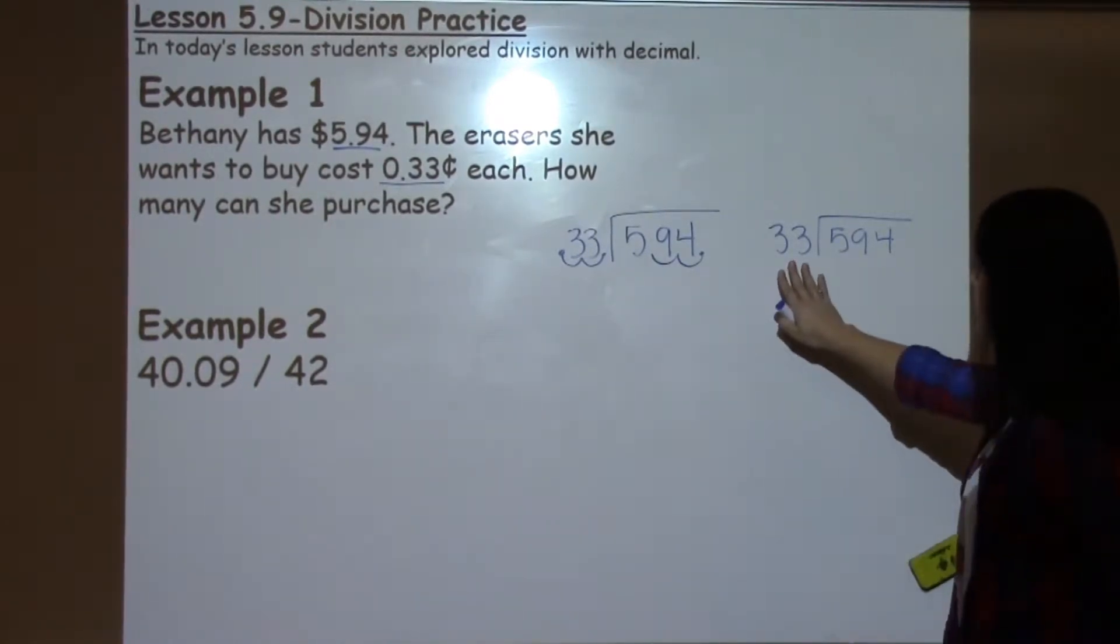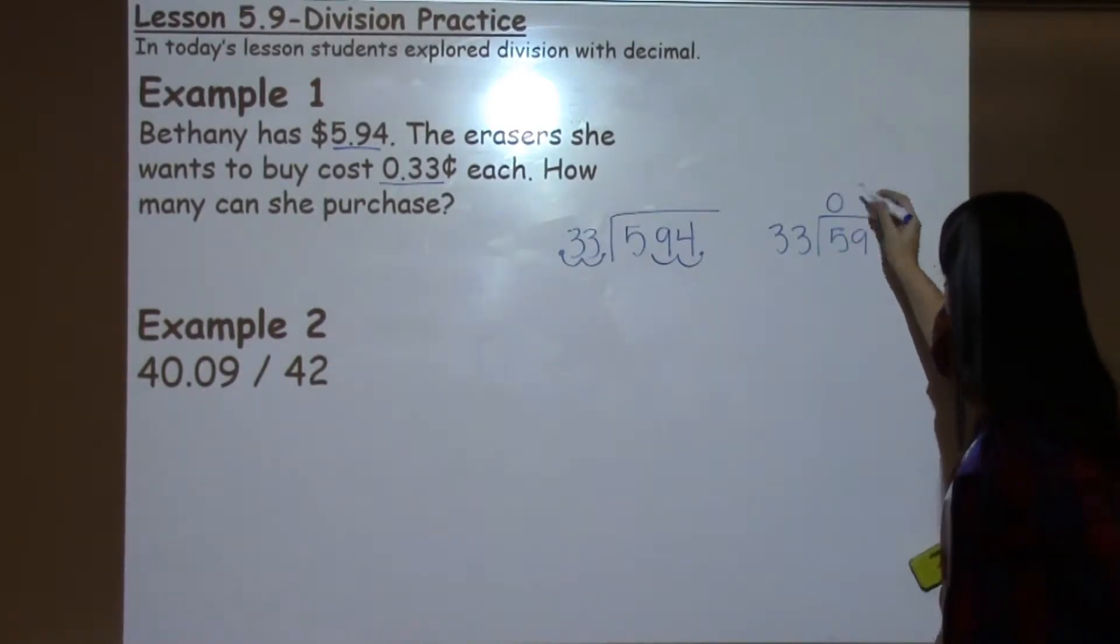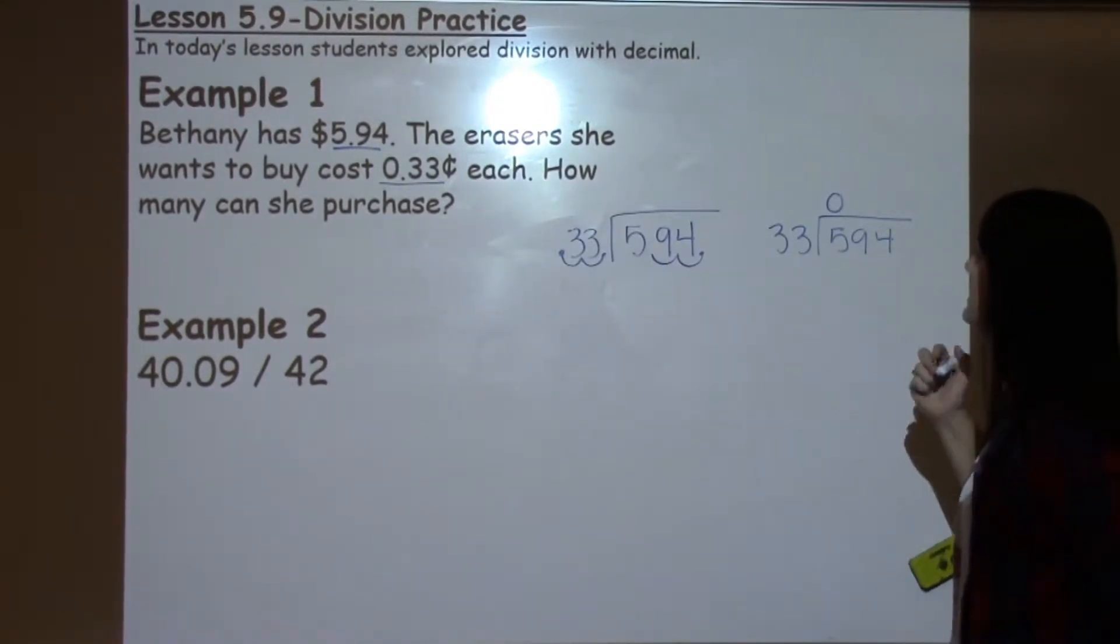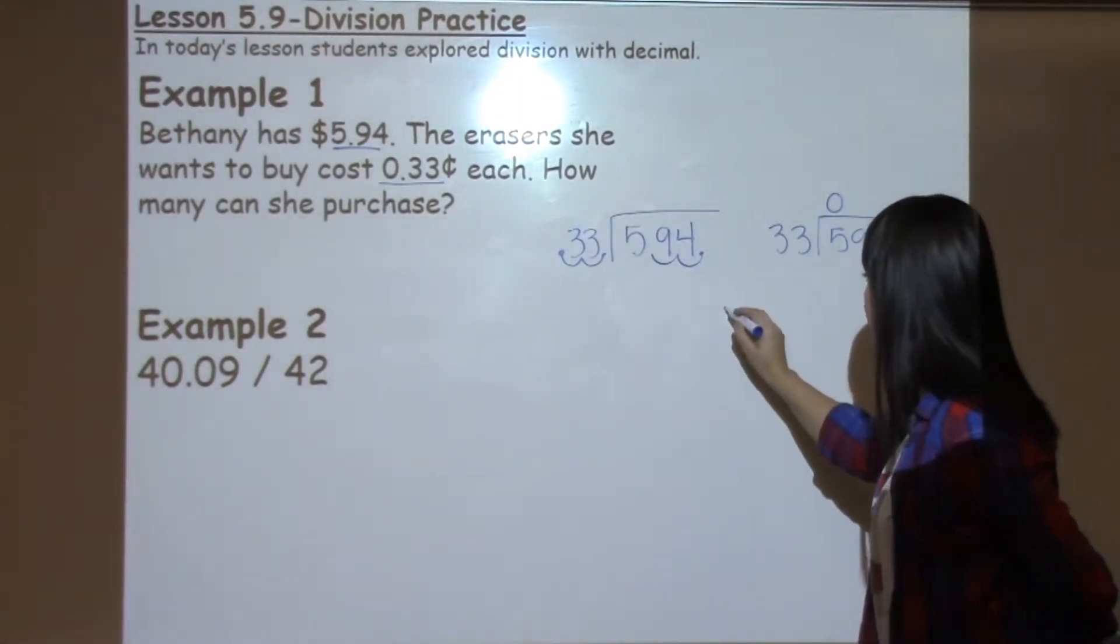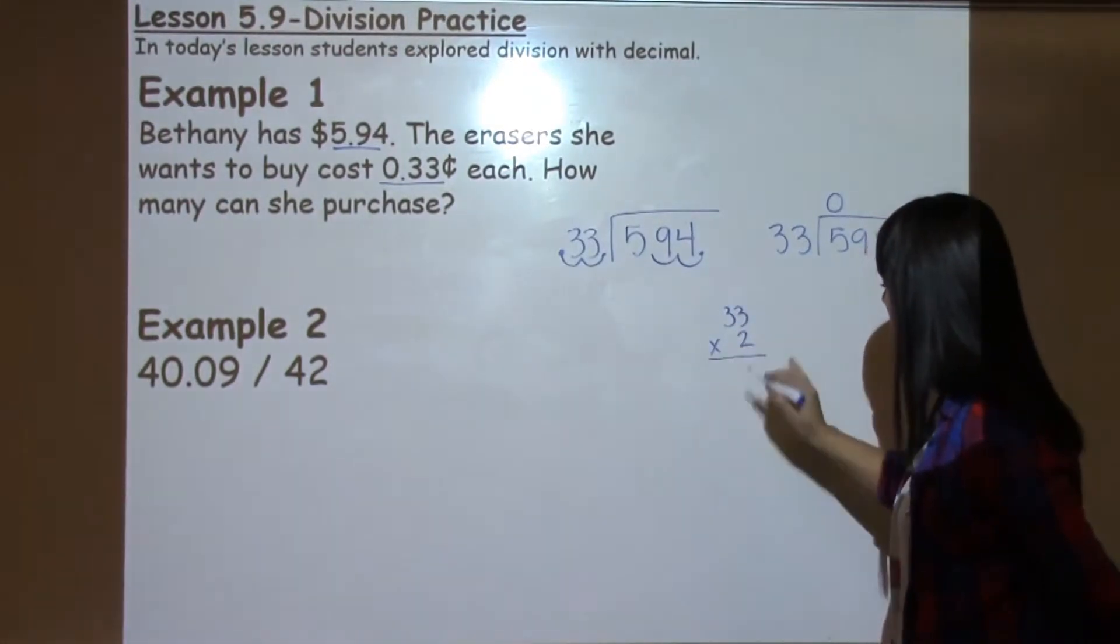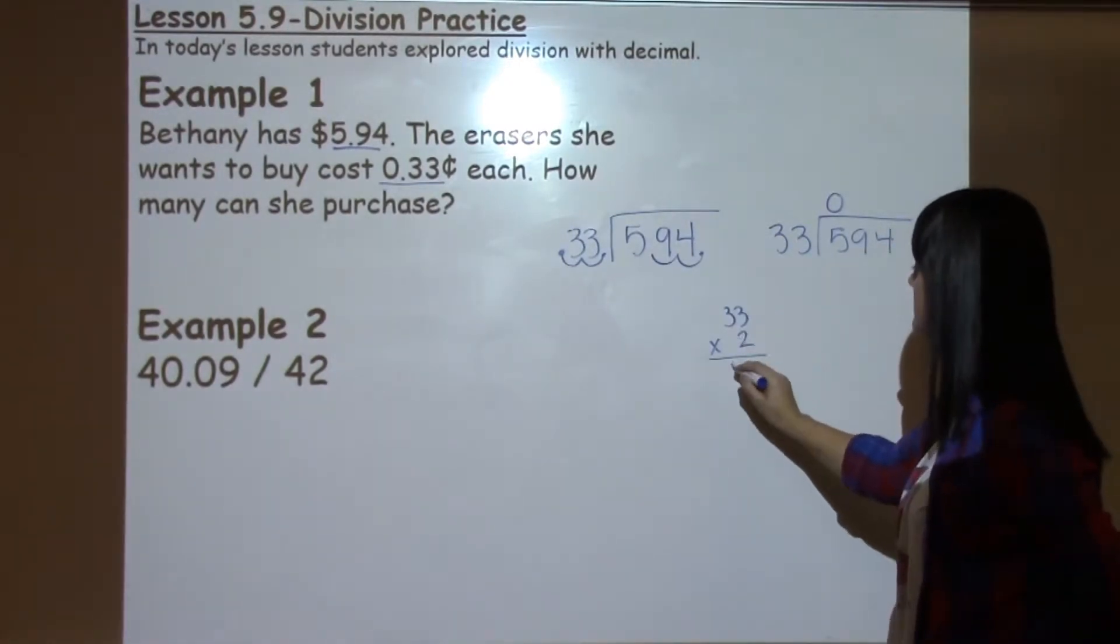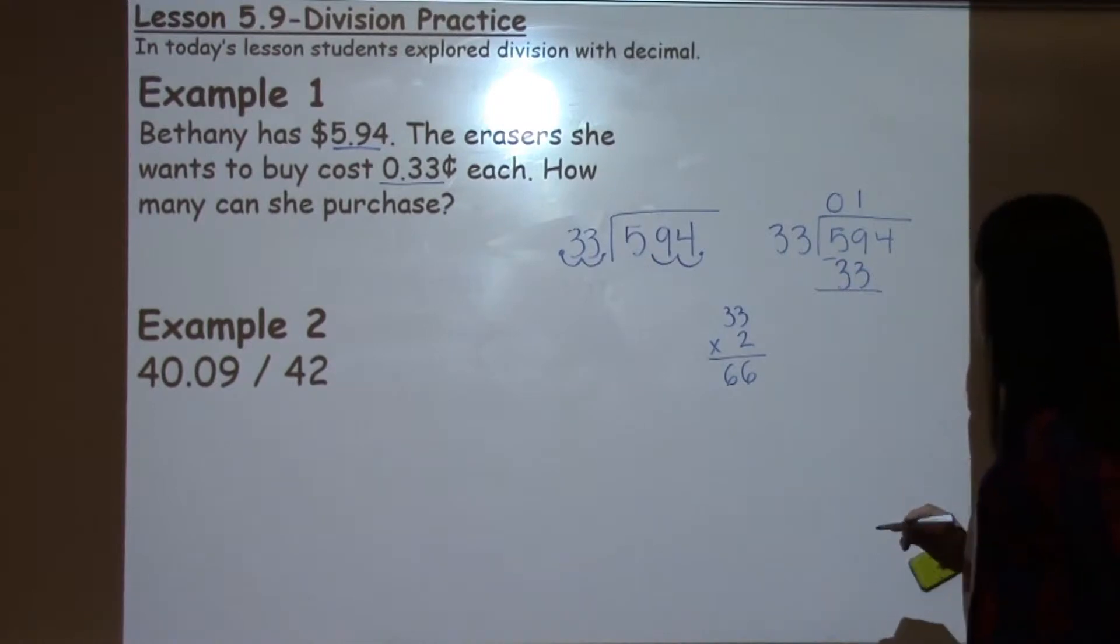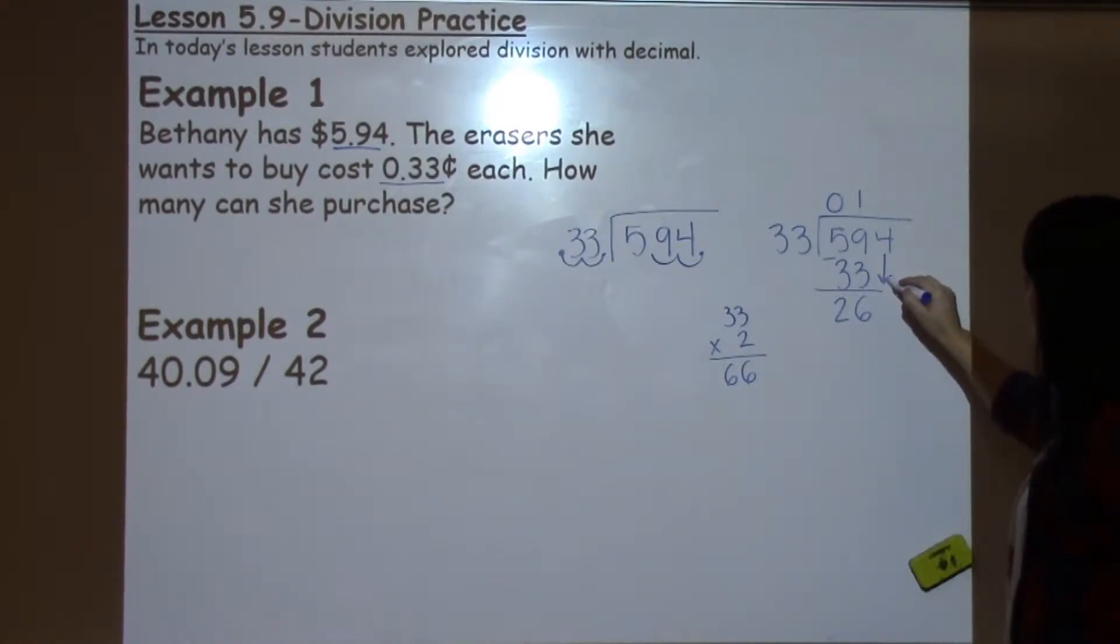Now we can go ahead with our division. How many times can $33 go into $5? $5 is way too small, so I know that it's going to be $0. Then I can start thinking about $59. $33 times what gets me close to $59? I know it's definitely going to go in once, but your student might be asking themselves, can it get in there twice? They could go ahead and pull that problem to the side and check. $2 times $3 is $6, $2 times $3 is $6. That's a little too much, so I know it's only going to be $1 time. Now I'm on to my subtraction step. $9 minus $3 is $6, $5 minus $3 is $2. And now I bring down my $4.